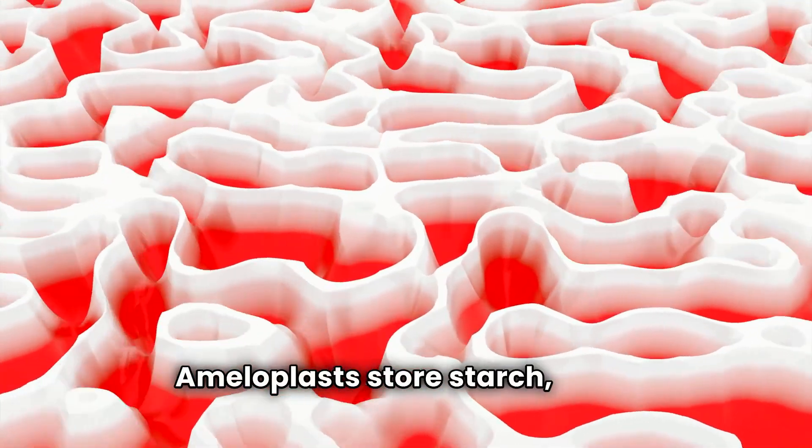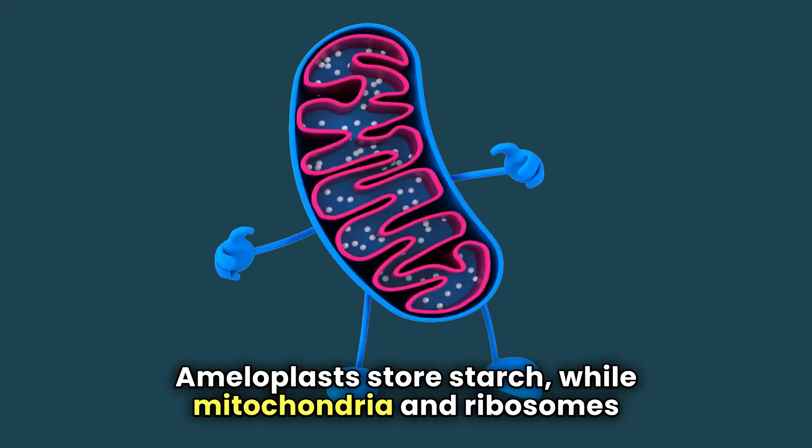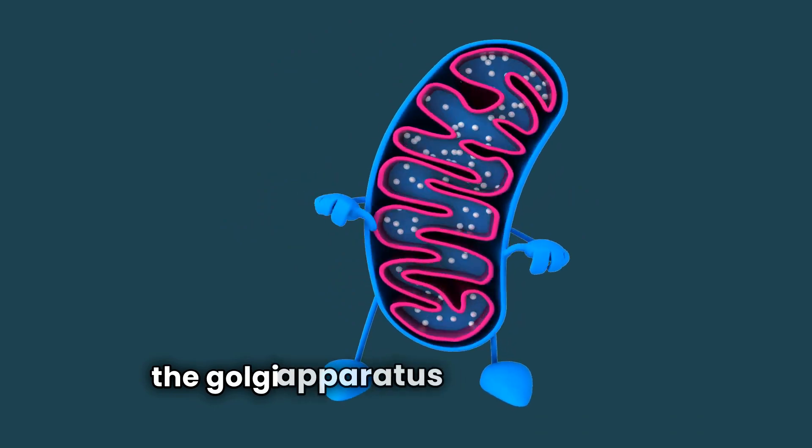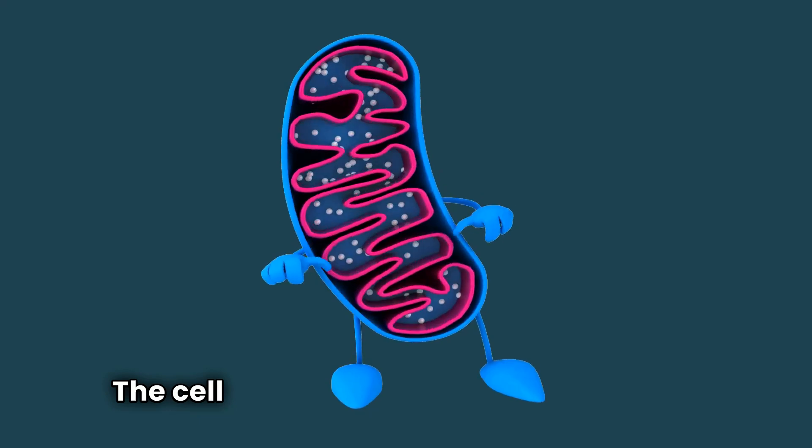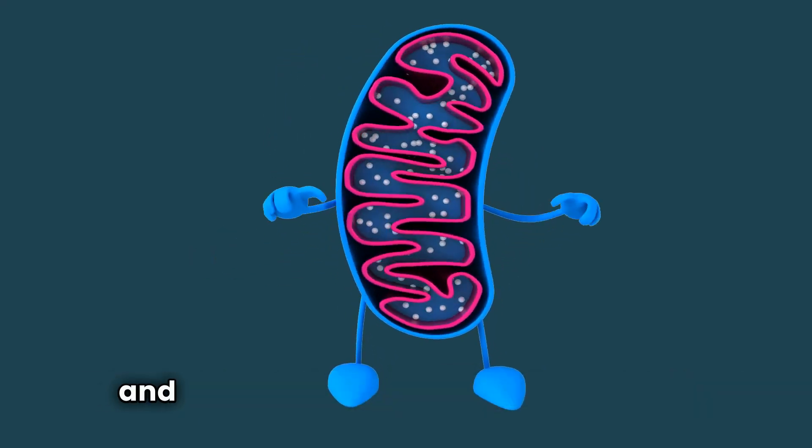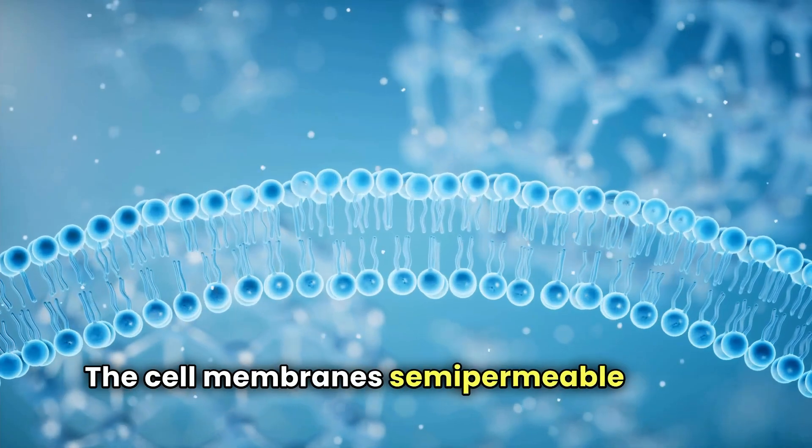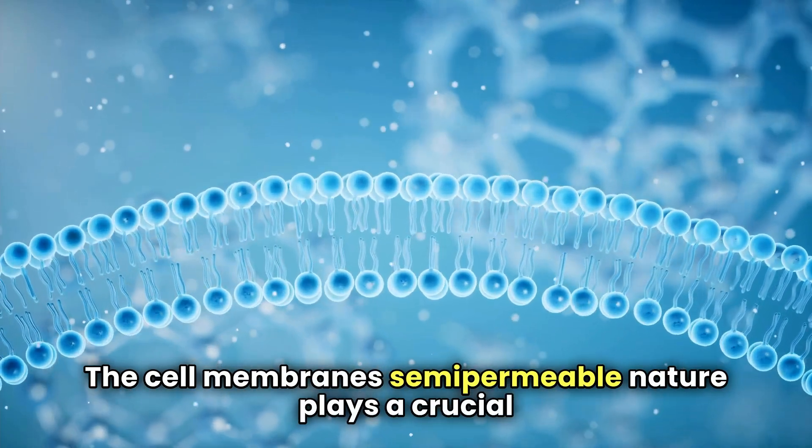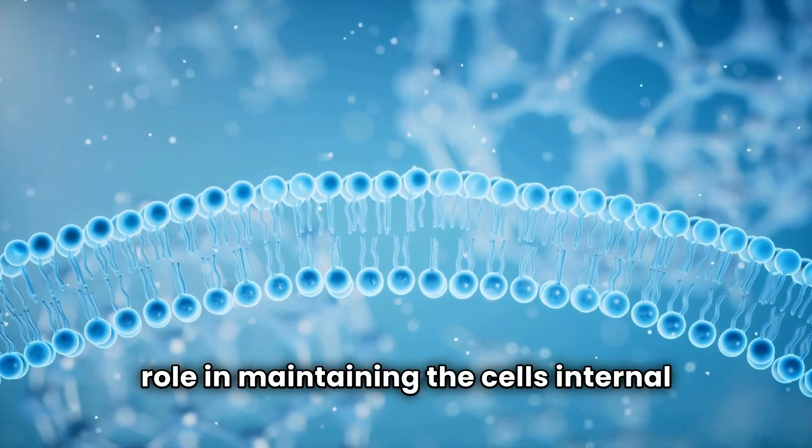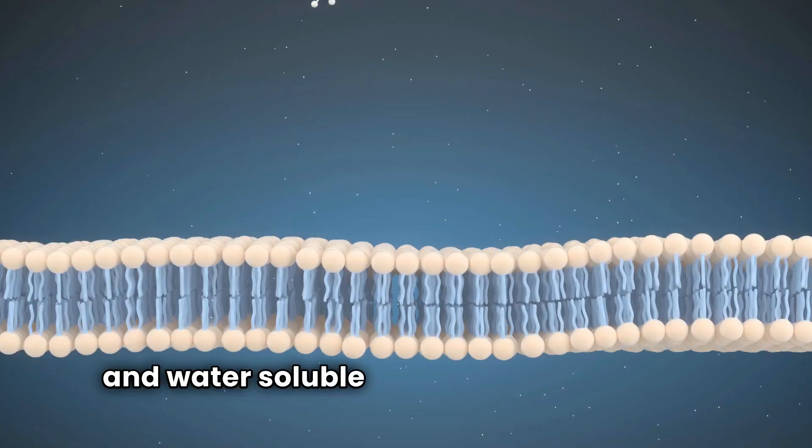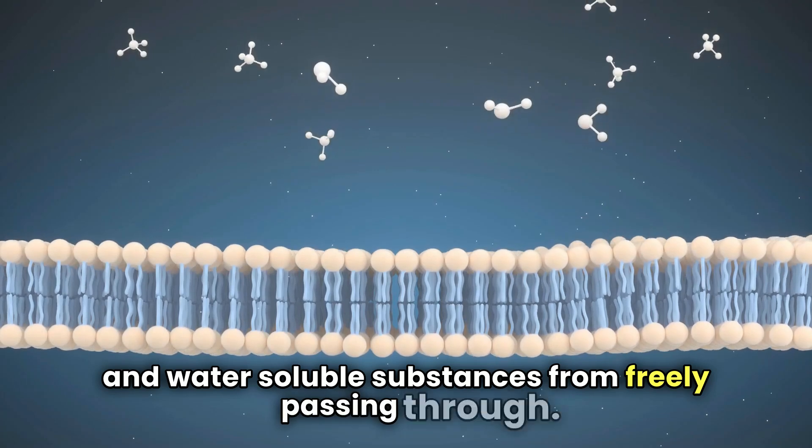Amyloplasts store starch, while mitochondria and ribosomes perform similar functions as in animal cells. The Golgi apparatus also packages materials. The cell wall offers additional protection and is primarily composed of cellulose. The cell membrane's semi-permeable nature plays a crucial role in maintaining the cell's internal environment. Composed of a lipid bilayer, it prevents water and water-soluble substances from freely passing through.